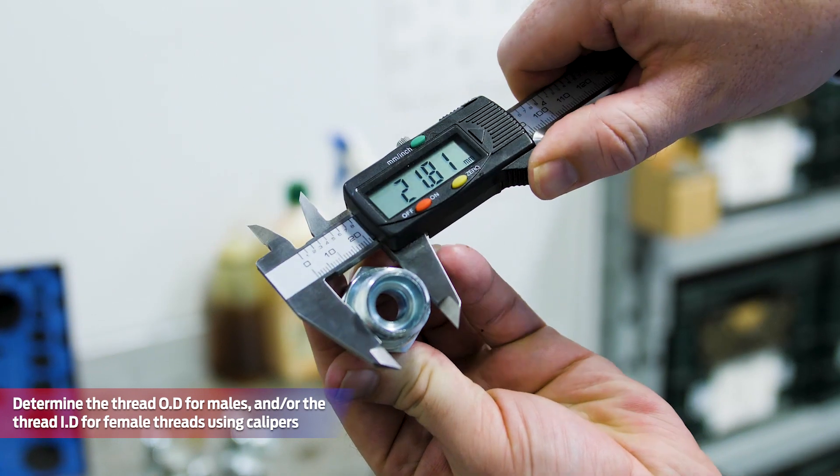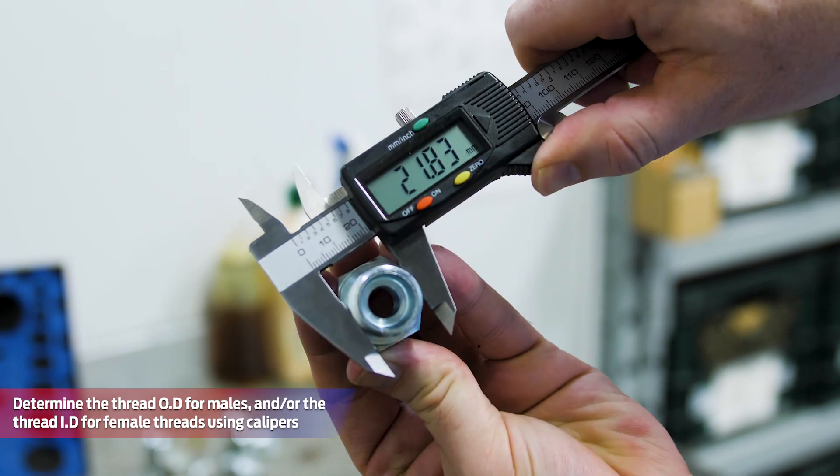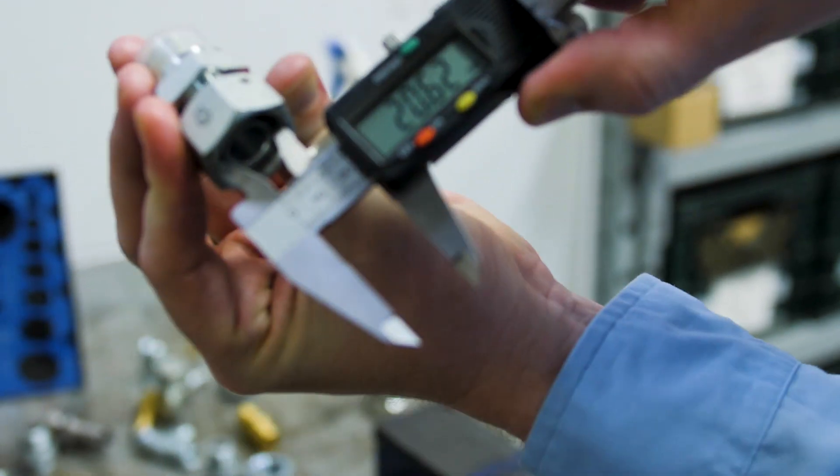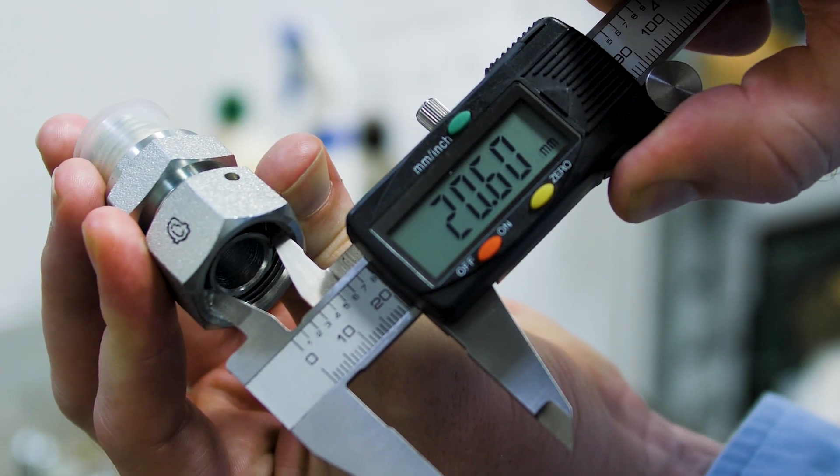Determine the thread OD for male threads or ID for female threads using calipers. If the fitting is tapered, be sure to take the OD reading at the third row of threads.